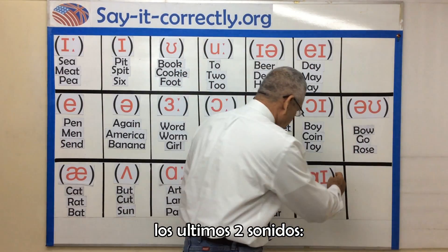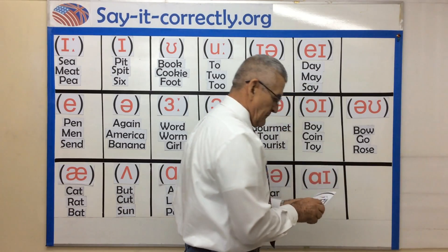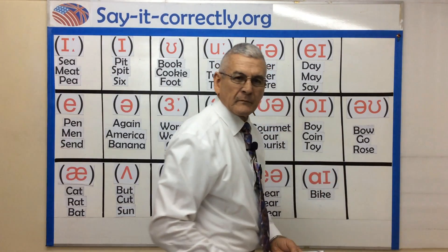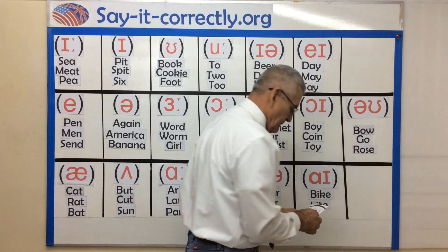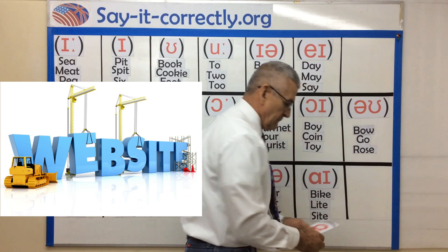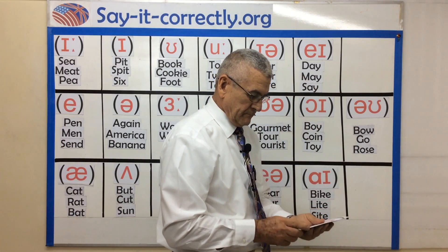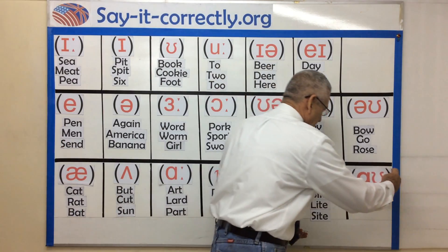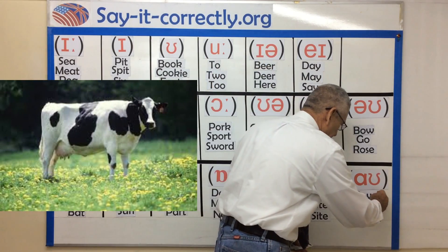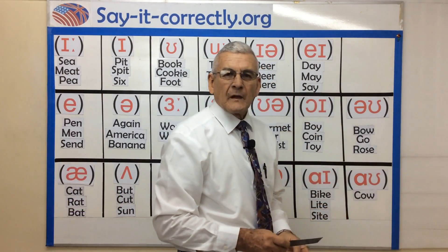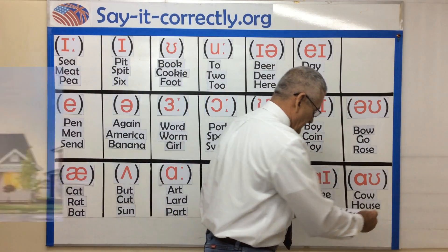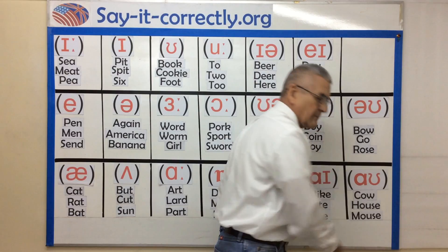Last two sounds — bike, light, sight. And cow, house, mouse.